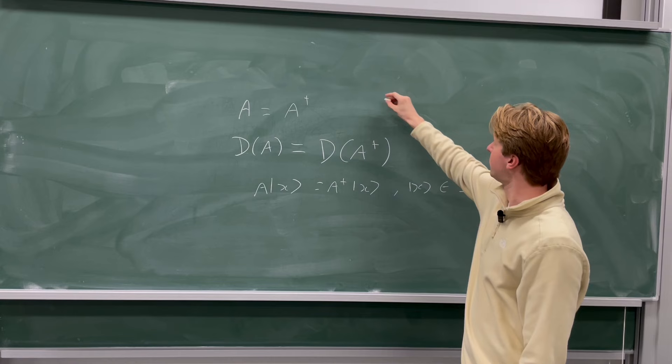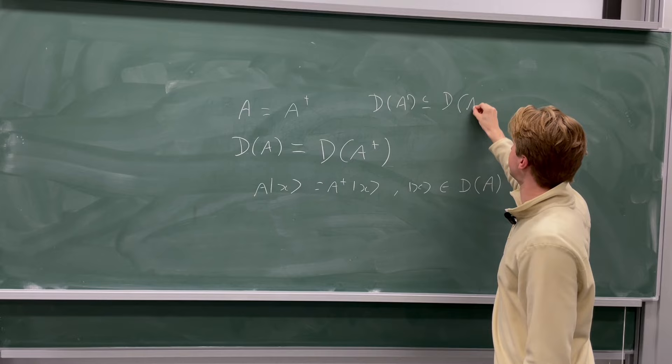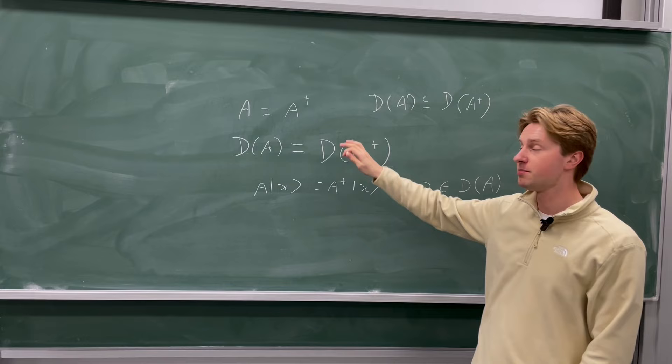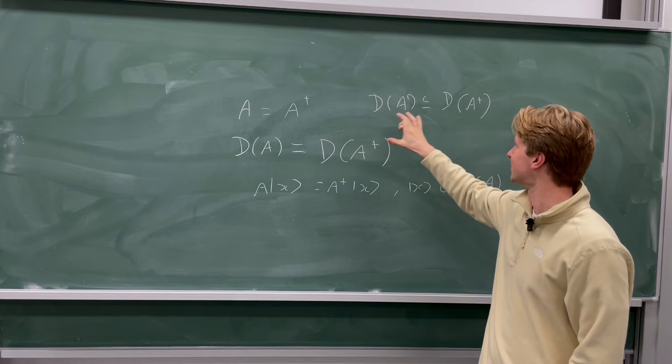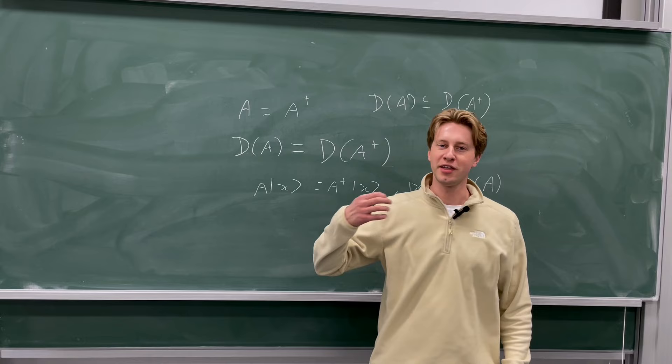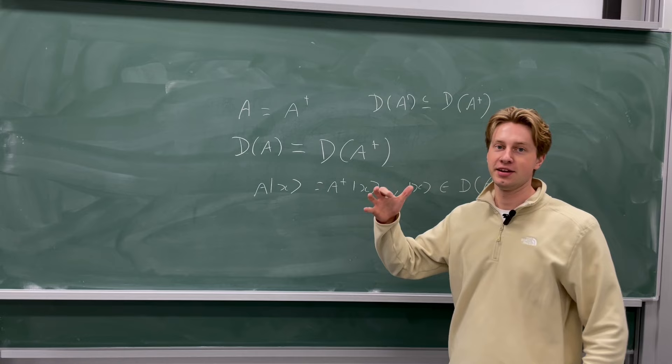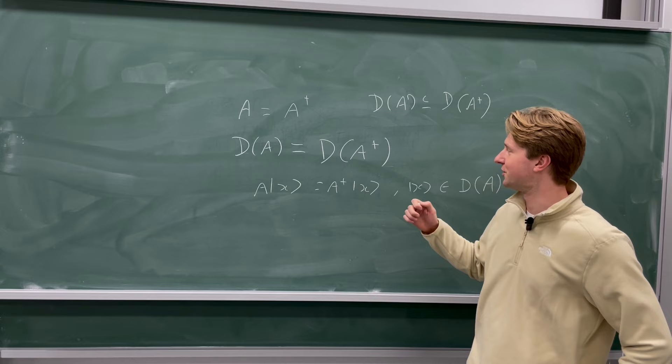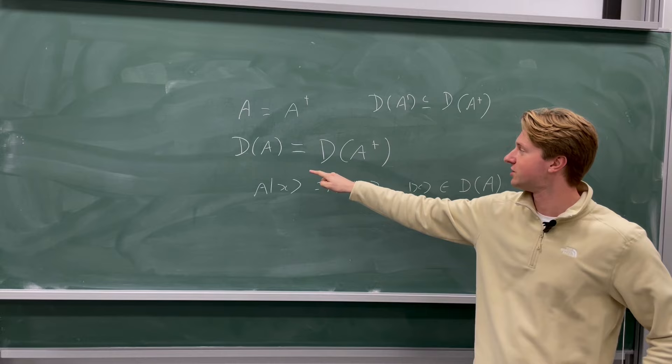Given that D(A) may be smaller than D(A†), there is often a way of defining a self-adjoint operator from a symmetric operator by extending the domain of A until D(A) equals D(A†). This is where the relevance of boundary conditions of the wave functions comes into play. In order to define a self-adjoint Hamiltonian — finding self-adjoint extensions of the Laplacian — we must consider the boundary conditions that characterize the domains D(A) and D(A†).